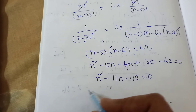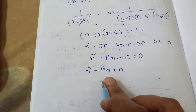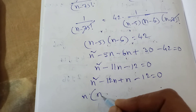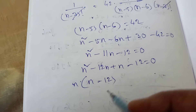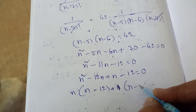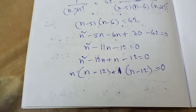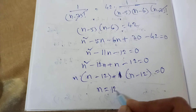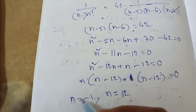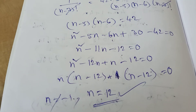Factoring: n(n minus 12) plus 1(n minus 12) equals 0, so (n+1)(n minus 12) equals 0. Thus n equals 12 or n equals minus 1. Since n is a natural number, minus 1 does not exist. Therefore the answer is n equals 12.